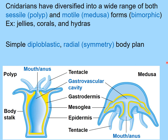Cnidarians have a diploblastic body plan, meaning they develop two germ layers, and their symmetry is radial. They are filter feeders with a single body opening that serves as both mouth and anus. This opening leads to a cavity called the gastrovascular cavity.